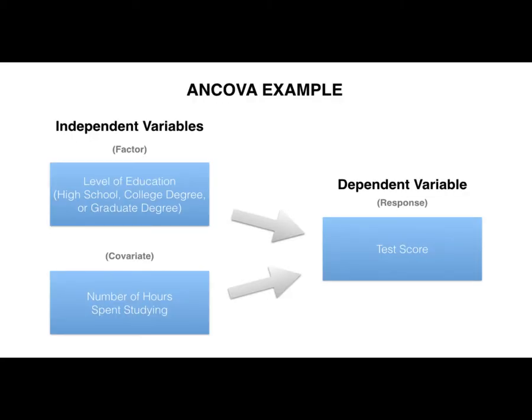For example, suppose you want to compare test scores of three different groups defined by their level of education, but you worry that different groups of subjects might spend different numbers of hours studying for the test. You can use an ANCOVA to control for number of hours spent studying, so you can directly compare test scores based on level of education.